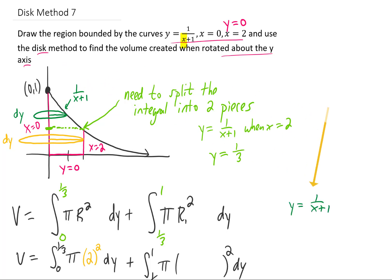But we need this radius in terms of y, so we need to solve this equation for x. We do that by first multiplying both sides of the equation by x plus one. We can divide both sides by y now, and we can subtract one from both sides. That gives us that the radius in this region is one over y minus one.